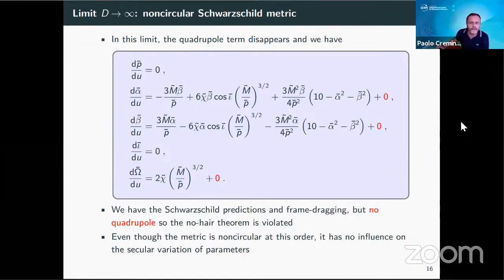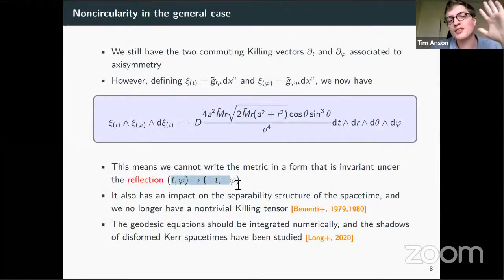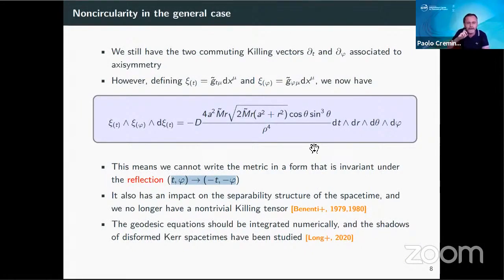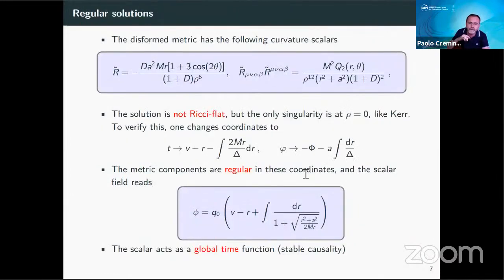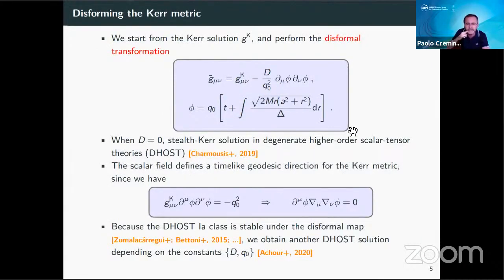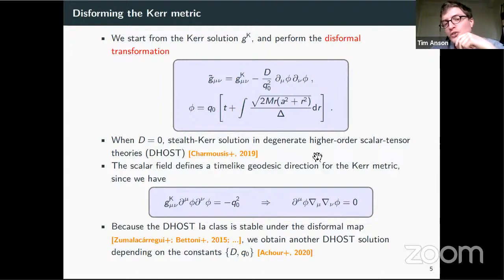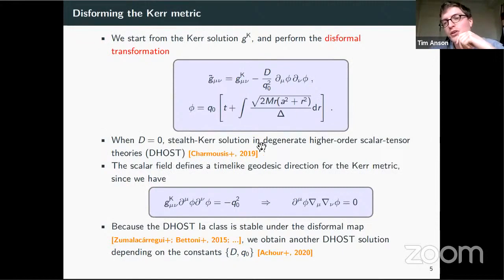Can you repeat what you mean by non-circular spacetimes? Intuitively, it just means you can't flip T and phi simultaneously — you can't find a coordinate system where that reflection symmetry is apparent. The fact that there's a cross term in the metric comes precisely from the scalar field having both time and radial dependence. If you didn't have the time dependence, the disformal transformation would only add a g_RR term, and the cross term would not be present.